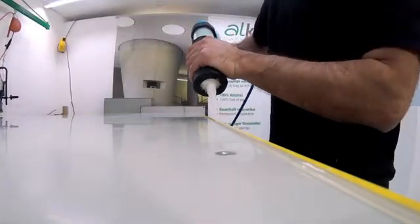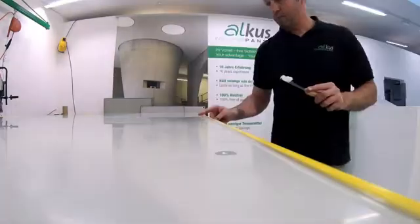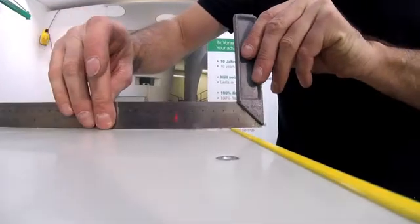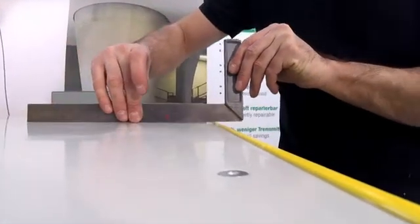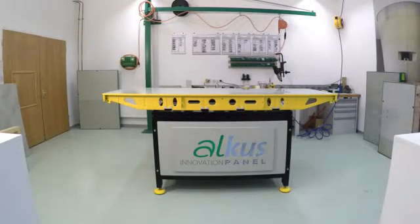The gap between the formwork and the panel can but doesn't have to be filled with silicone. Since the AUKUS panel neither swells nor shrinks, it's installed flush into the formwork. This guarantees a perfect joint pattern.